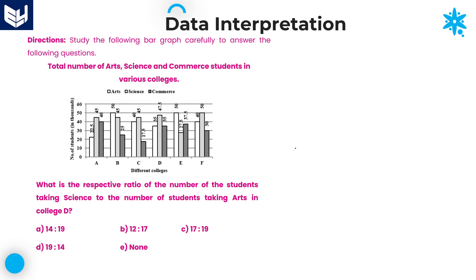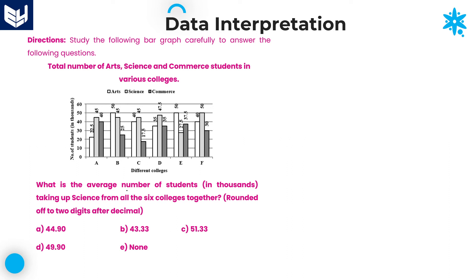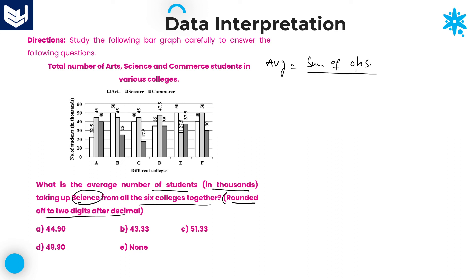Last question in this session: what is the average number of students — in terms of thousands, rounded off to 2 decimal places — taking science from all 6 colleges together? We know that average equals sum of observations divided by number of observations.